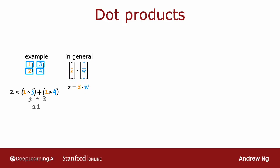That's the vector-vector dot product. It turns out there's another equivalent way of writing a dot product. Given a vector A — that is 1, 2 written as a column — you can turn this into a row, that is, you can turn it from what's called a column vector to a row vector by taking the transpose of A. The transpose of a vector A means you take this vector and lay its elements on the side.